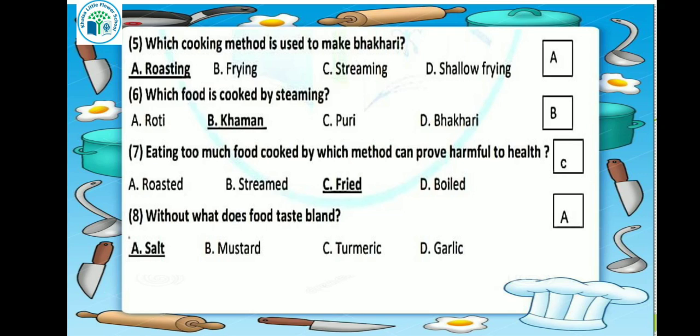Which food is cooked by steaming? From the given options — roti, khaman, puri, bhakri — khaman is made by steaming. So our answer will be option B.